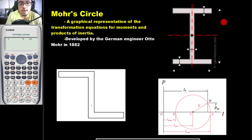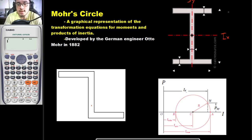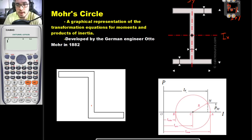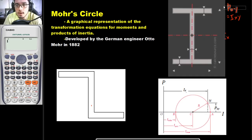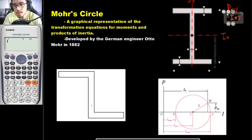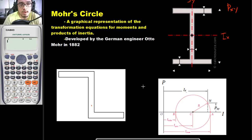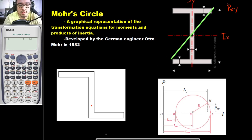Suppose that we have a section where we have already solved for the moment of inertia about the x-axis, the moment of inertia about the y-axis, and the product of inertia, Pxy. Pxy is basically equal to Ixy — it just depends on the book you are reading, so this is a matter of nomenclature. Once you already have Ix, Iy, and you want to determine the moment of inertia about a different axis — let's say the u-axis — we would make use of our Mohr's Circle.